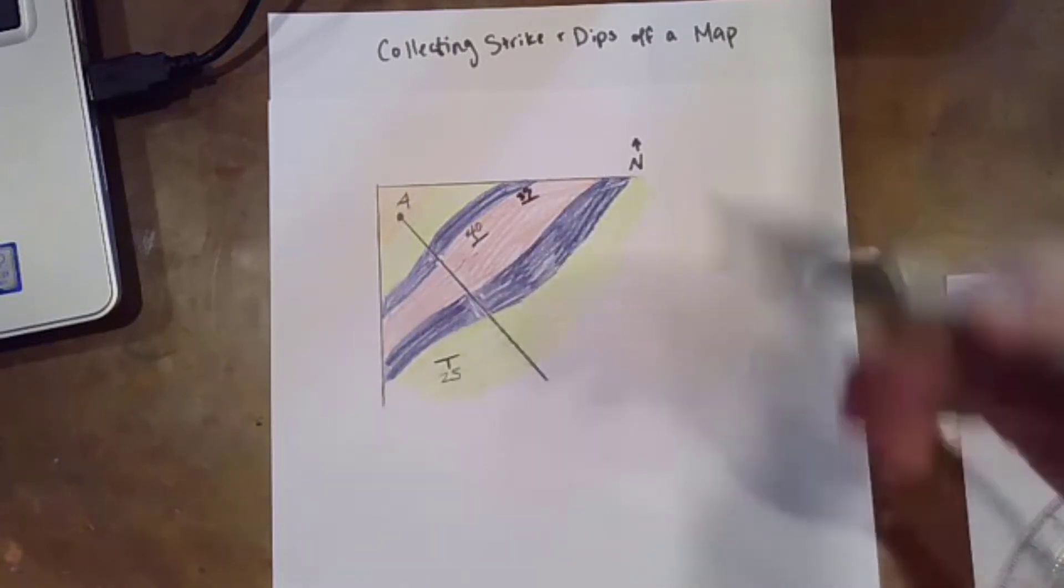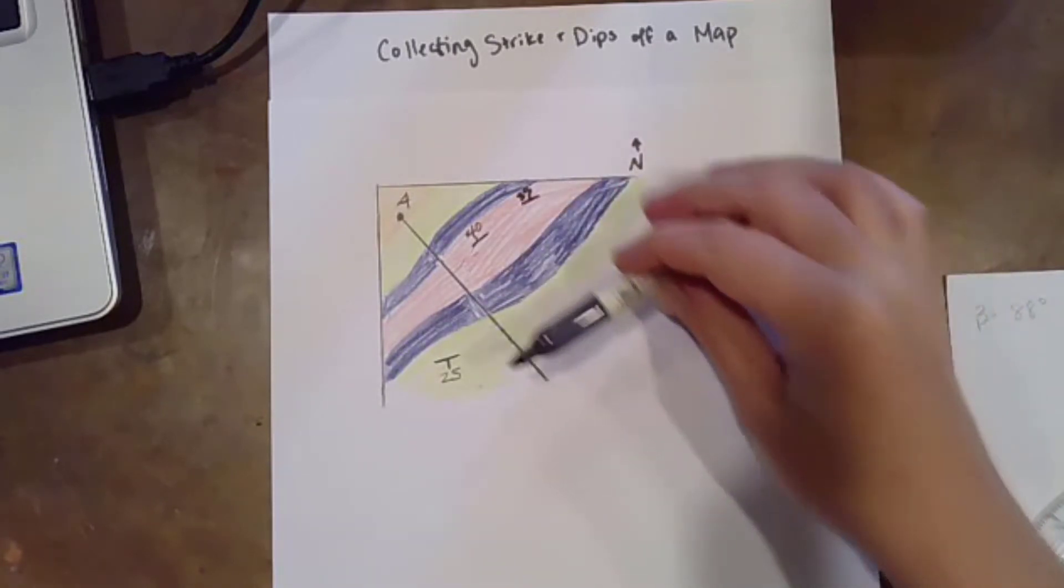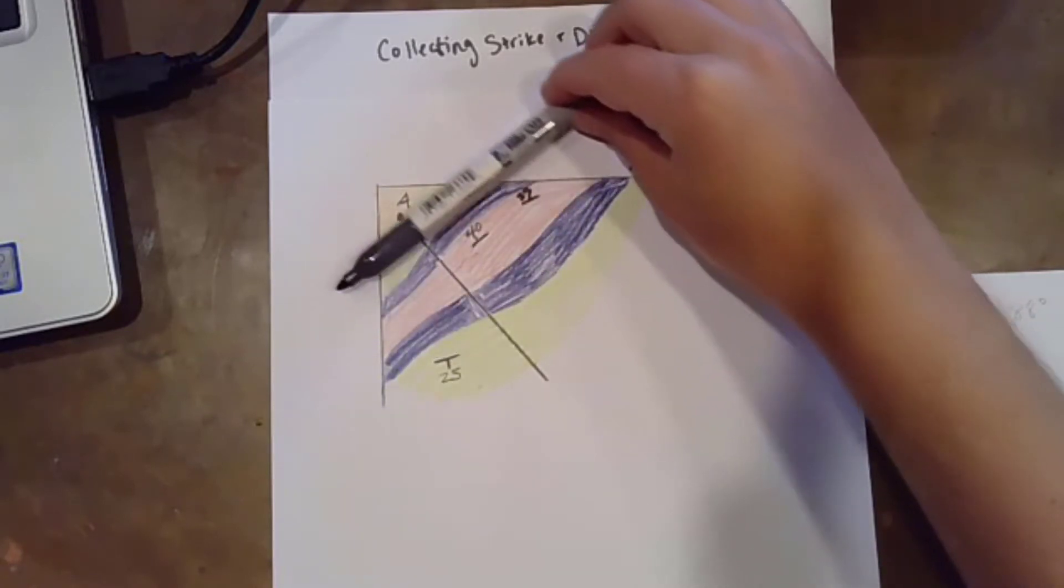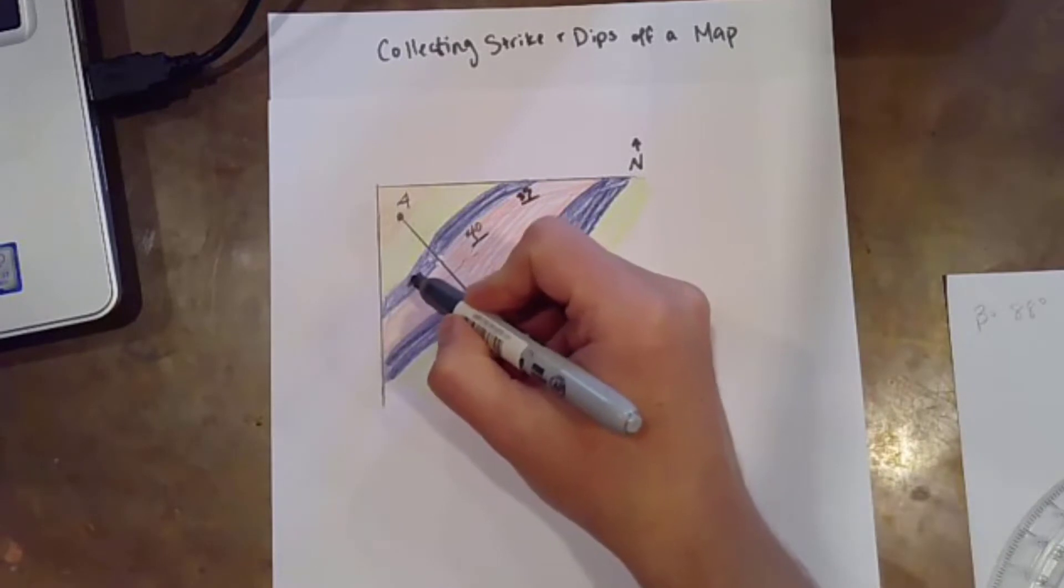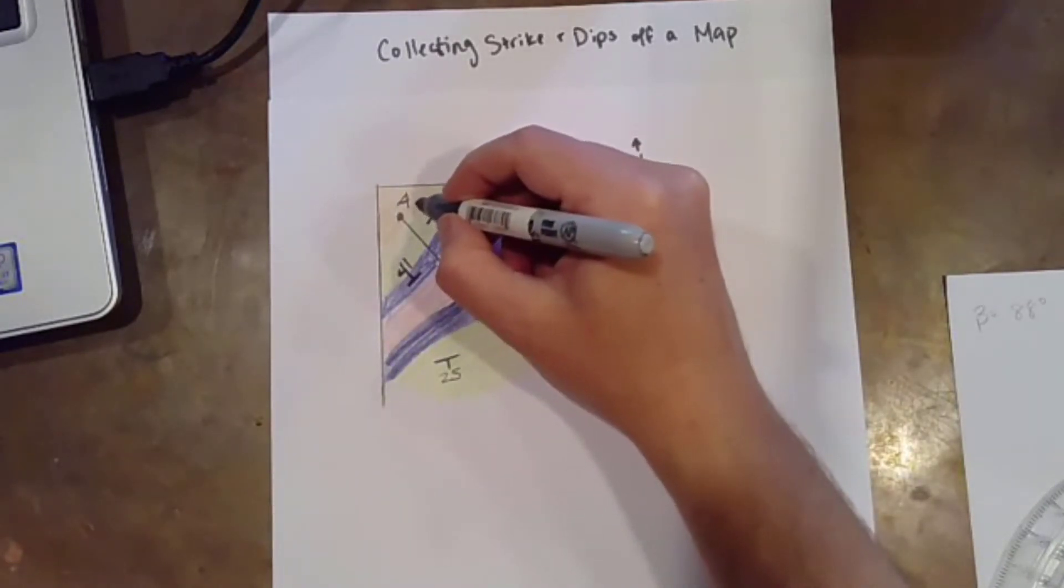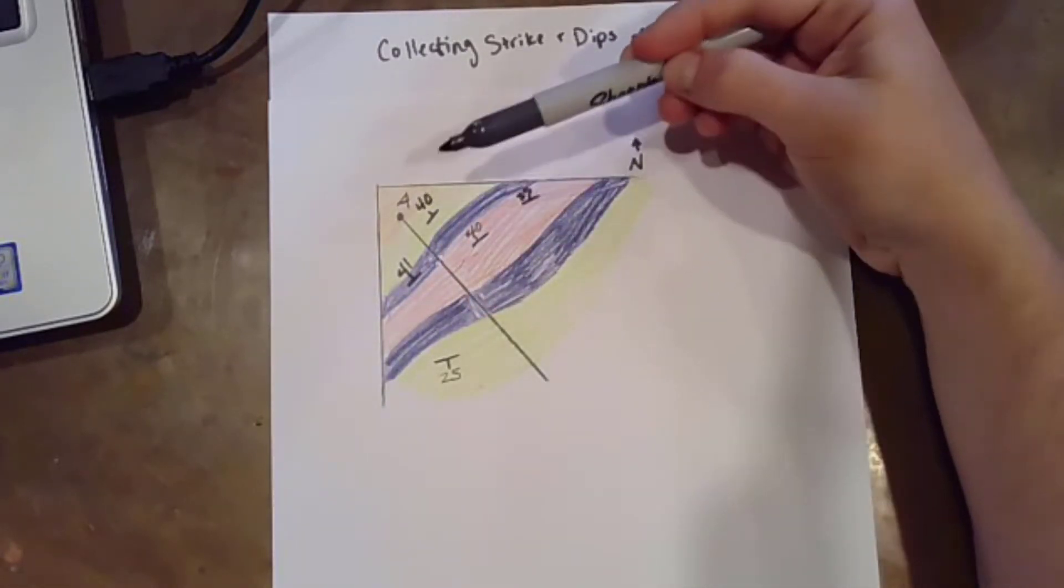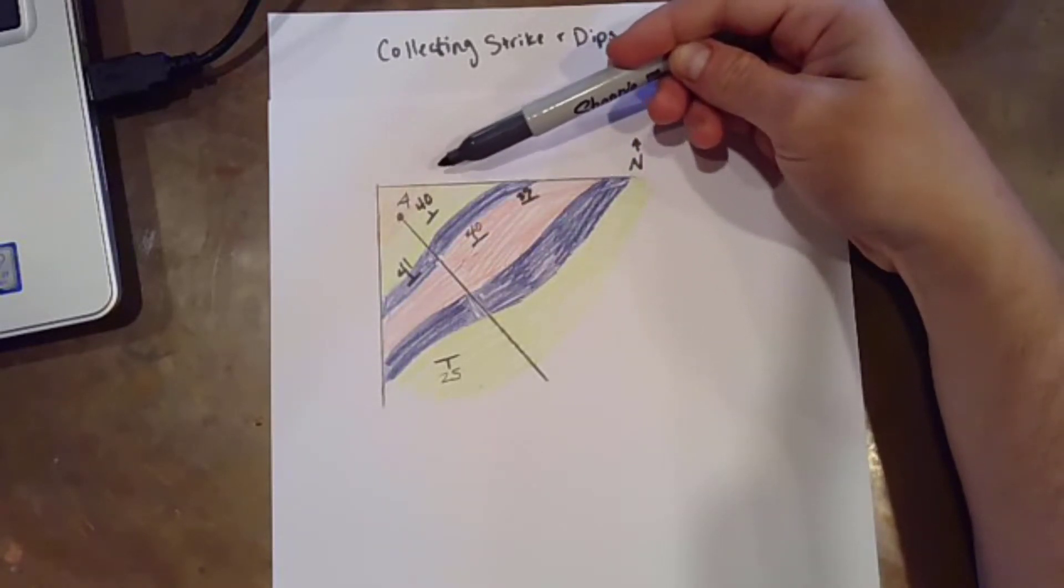You also want to make sure that you capture any major patterns. So let's say that all of the strike and dips through here toward A seem to be 40s. So let's say there's one right here that's 41 and there's one right here that's 40 again. You don't need to necessarily keep collecting those strike and dips if they all seem to be conveying the same information.